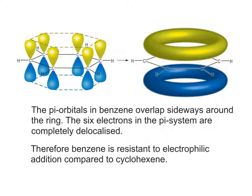But in benzene, the pi orbitals overlap sideways all around the ring. So the six electrons in the pi system are completely delocalised. This means that benzene is resistant to electrophilic addition compared to cyclohexene.